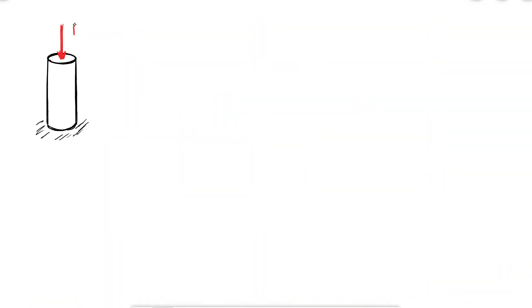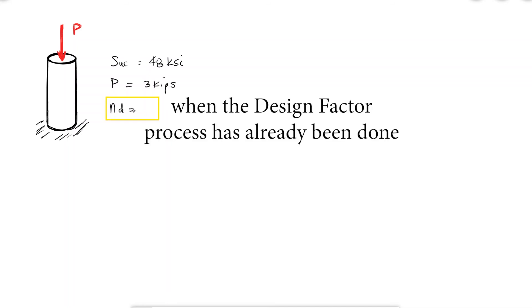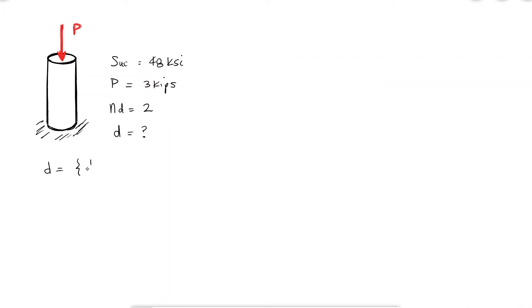Let's go back to the simple example from before, this time knowing that the ultimate compressive strength is 48 ksi and that the load is 3 kips. Additionally, let's suppose that from my design factor calculations, I found a design factor of 2. I would like to know then the diameter of my rod, assuming that it comes in multiples of 1 eighth of an inch. Since I know that the design factor is equal to the strength over the stress, I can solve for that diameter and find out that it's 0.4 inches. The closest option would be 3 eighths of an inch, but if I choose that diameter, my factor of safety would be lower than the design factor of 2, and therefore I have to select a diameter of 0.5 inches.